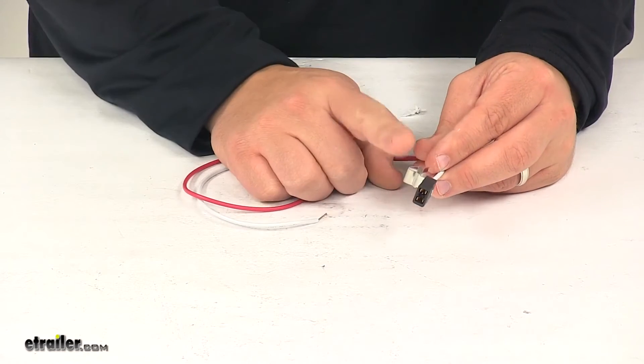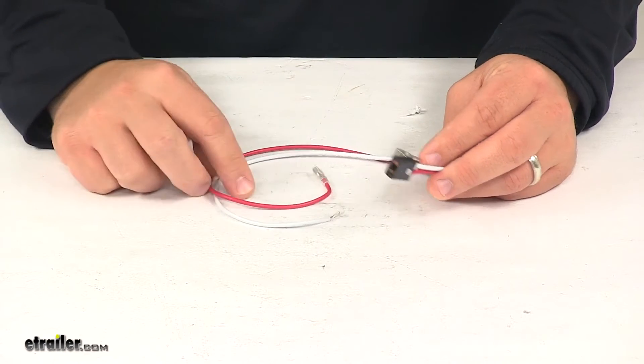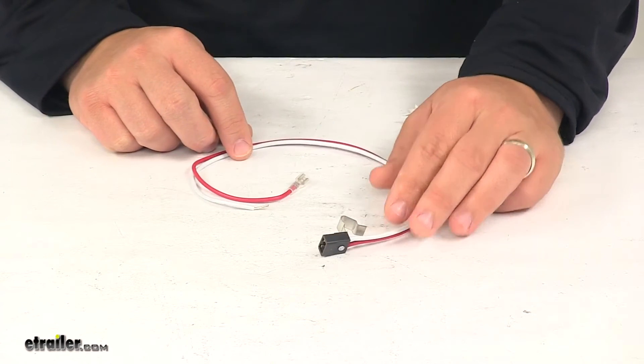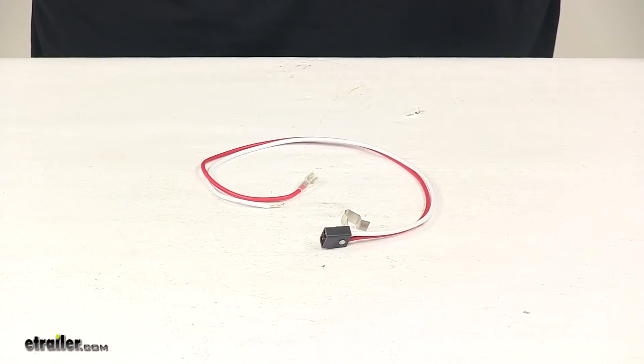Installation is quick and easy. It comes with the clip already attached and the product is made in the USA. That's going to do it for today's look at the replacement lamp socket for Ventline RV range hoods.